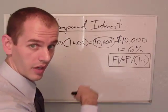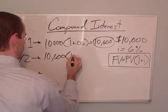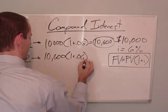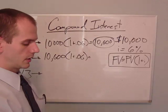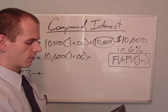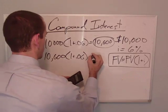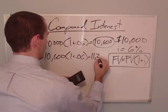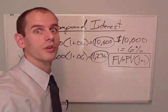So now we take this amount and we start out with year two. And I'm going to do this on the calculator. 10,600 times 1.06 equals $11,236.